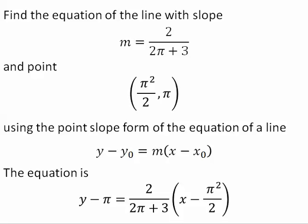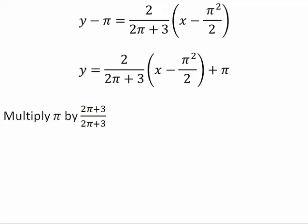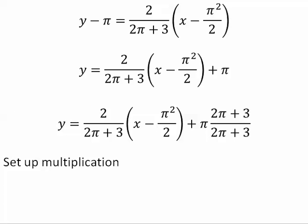First, what I'm going to do is I'm going to add pi to both sides. Next, I multiply by 2 pi plus 3 over 2 pi plus 3. Now, it looks like some multiplication needs to be done, and I'm going to set up that multiplication.